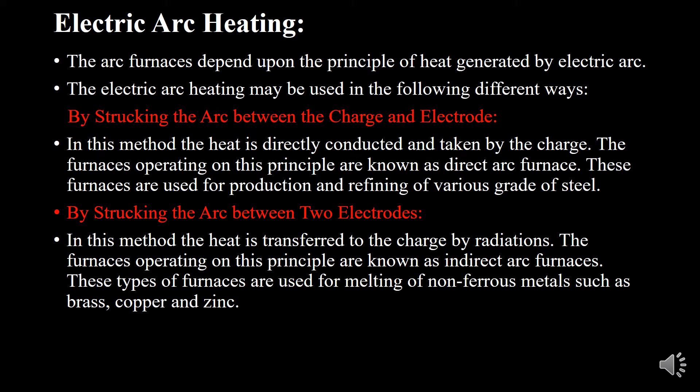While we discuss about electric arc heating, the arc furnaces depend upon the principle of heat generated by electric arc. There are mainly two ways: by striking the arc between the charge and electrode, and by striking the arc between two electrodes. In the first method, the heat is directly conducted and taken by the charge. The furnaces operating on this principle are known as direct arc furnaces, used for production and refining of various grades of steel.